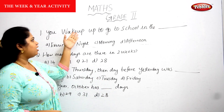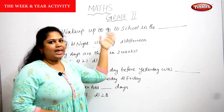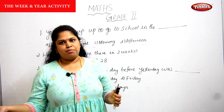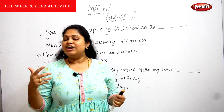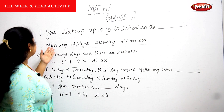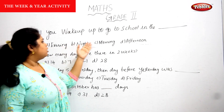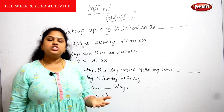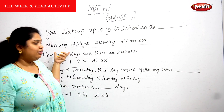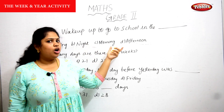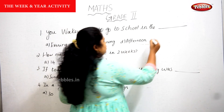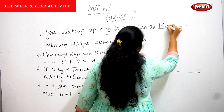See here: you wake up to go to school in the dash. You wake up and go to school. The options are evening, night, morning, and afternoon. On which time are you going to school? We are going to school in the morning, isn't it? So the answer is morning.